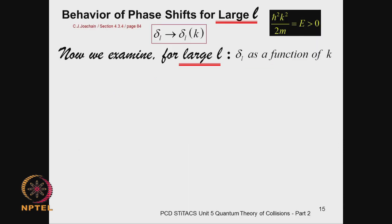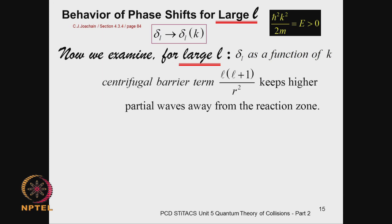Having considered the l = 0 behavior, we now consider large l. For large l, the limiting value as k → 0 is nπ by the Levinson theorem. But if you plot δ as a function of k — not just the limiting value — how will that graph look? That is the question we now examine.